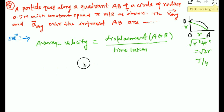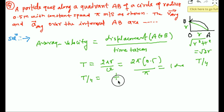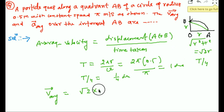The time period T equals 2πr/v. Here, r = 0.5 m and v = π m/s, so T = 2π × 0.5 / π = 1 second. Therefore, T/4 = 1/4 second. The displacement is √2 · r = √2 × 0.5. So the average velocity equals √2 × 0.5 divided by 1/4.